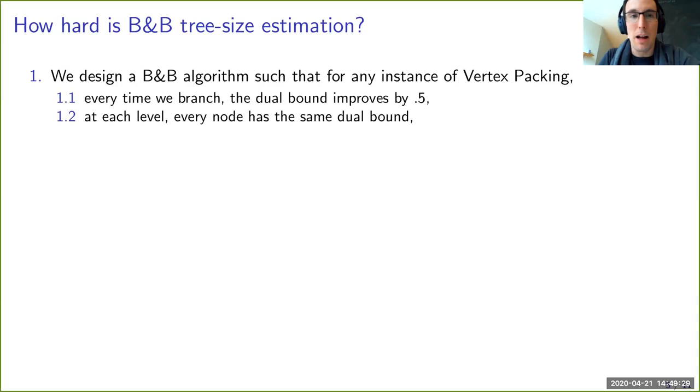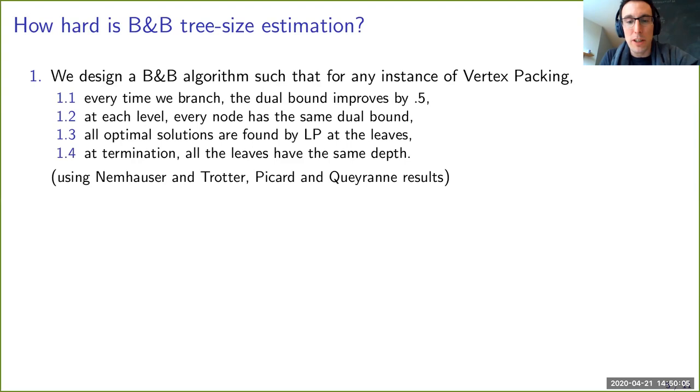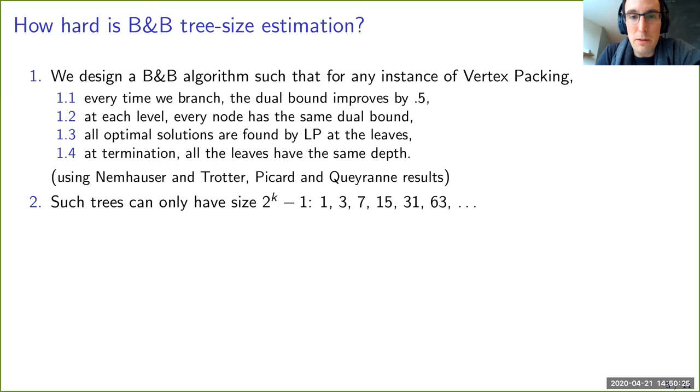And so by making this change, what we can ensure is that every time we branch, the dual bound improves by 0.5, which is crucial for the proof. And now, by having this, we can ensure that at every level of the tree, every node has the same dual bound. And because we're saying, for the purpose of this algorithm, there are no primal heuristics. The only way you can find solutions, feasible primal solutions is by LP. And so once you find a feasible solution at the leaves, then you just finished a level you're at and you're done. So all the optimal solutions are found by the LP at the leaves as a property of the algorithm. And so at termination, all the leaves have the same depth. And so these results use Nimhausen and Trotter and Picard and Keran results from the 70s.